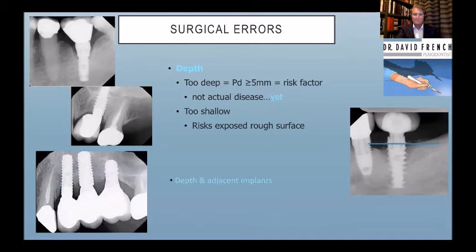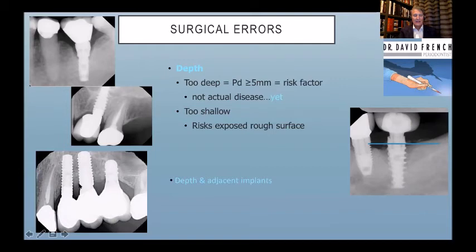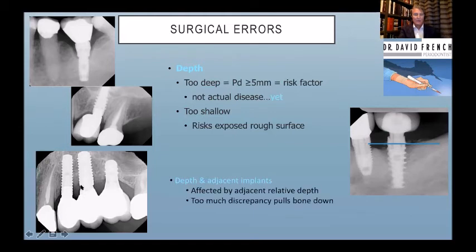Adjacent implants: here's an early bone-level case where the implants were slightly close but more importantly at different heights. The bone loss from the platform connection wasn't well understood at the time. The differential height pulled the bone down — there's a halo effect — and it also affected the adjacent tooth. Be careful with adjacent implants to match the height of the platforms.